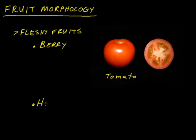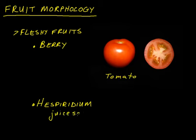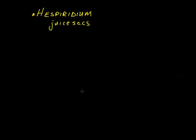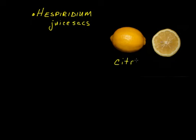The next type of fleshy fruit has an unusual name and it's called a Hesperidium. It's characterized by numerous inner juice sacks. This is one that is familiar to all of us in Florida as citrus — so limes, lemons, oranges, grapefruit, etc. fall under the category of Hesperidium type fruits.